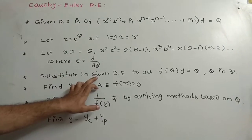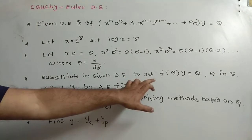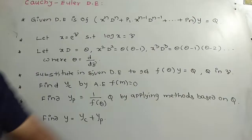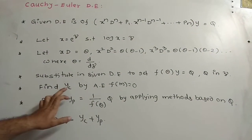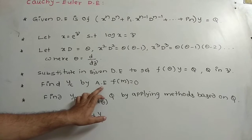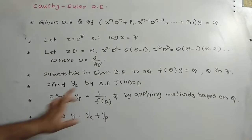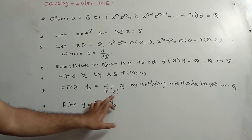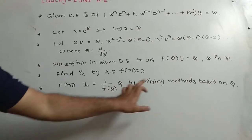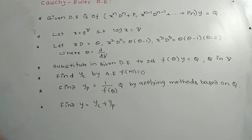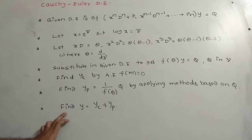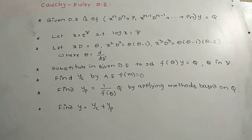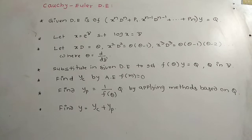You substitute these values in the given differential equation to get the form f(θ)y = q, where q is in terms of the z variable. Then find the complementary function by calculating the auxiliary equation f(m) = 0. Find the particular integral yp = [1/f(θ)]·q by applying previous well-known methods, then calculate the complete solution as yc plus yp. This is the brief procedure for the Cauchy-Euler differential equation.